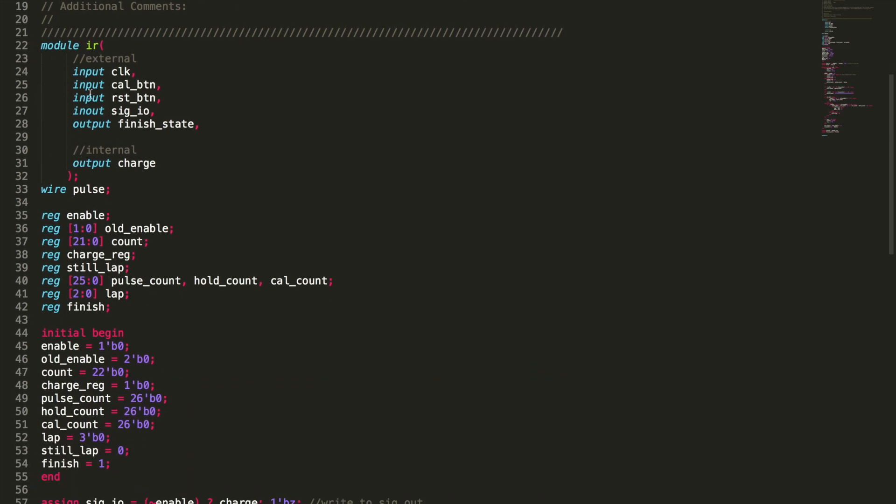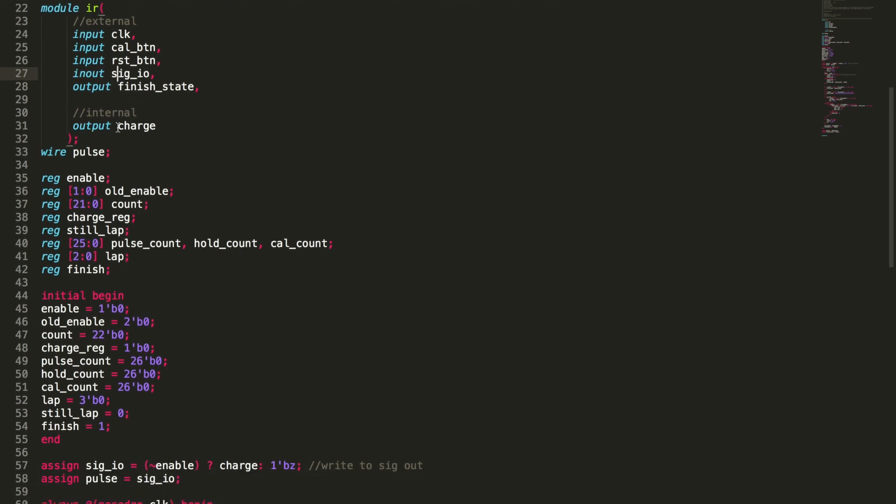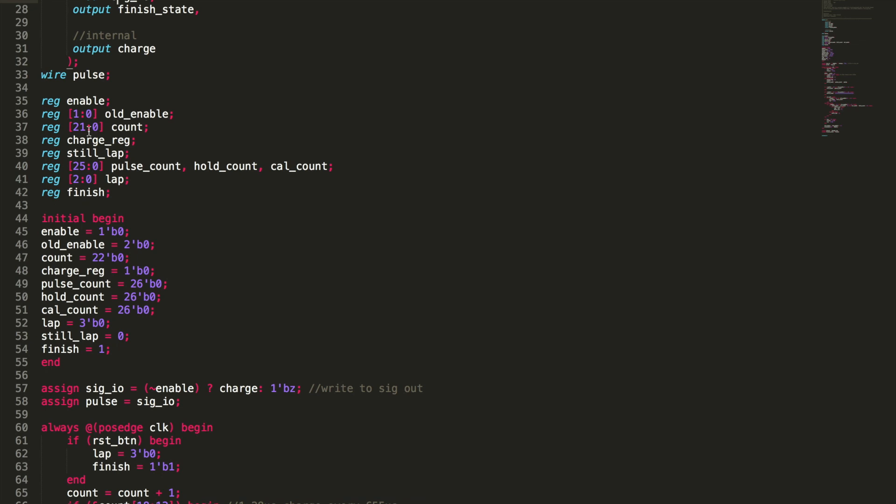We've got our inputs and our outputs. We're going to input a clock, input the calibration button, the reset button. The signal IO is an in out. As you see here, we're going to output the finished state, and then we're going to output a charge. So the signal IO is going to be where you're going to pull in that signal. And then you're going to have to output an actual charge.